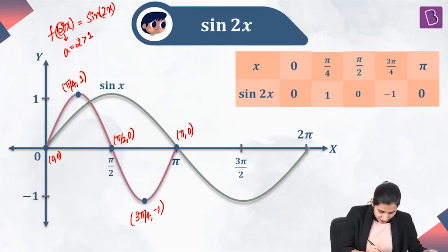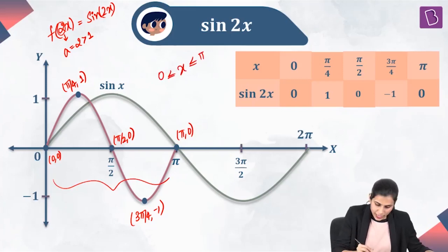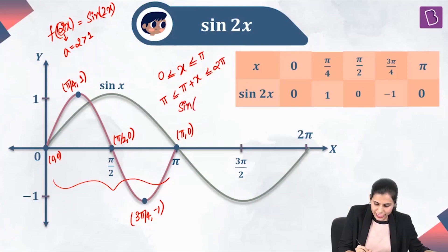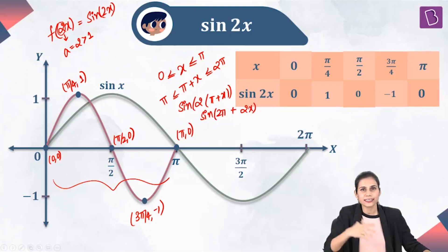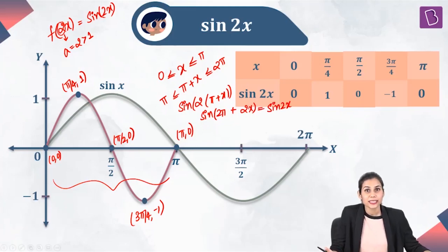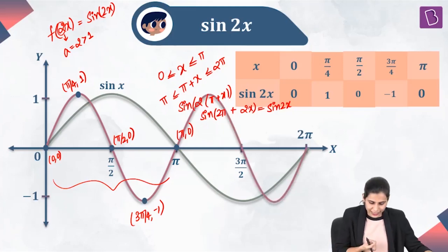If x lies between 0 and π, then π + x lies between π and 2π. I am interested in sin(2x) — that means sin(2(π + x)), which is sin(2π + 2x). Since sin(2π + anything) equals sin of that thing, this is sin(2x). That means the graph of sin(2x) in the interval 0 to π is exactly the same as in the interval π to 2π.